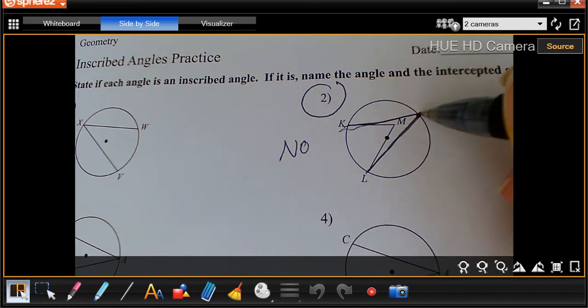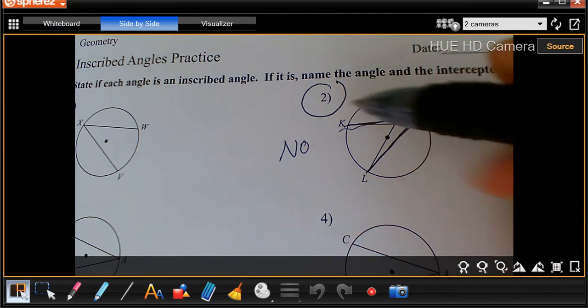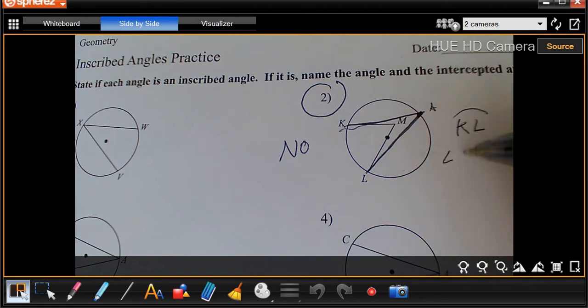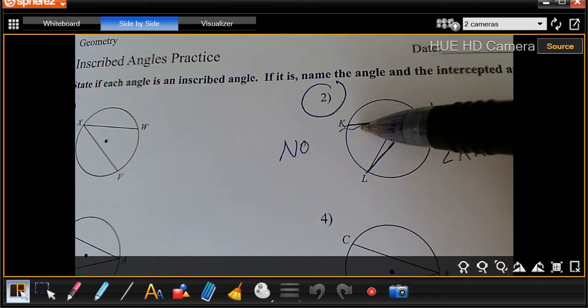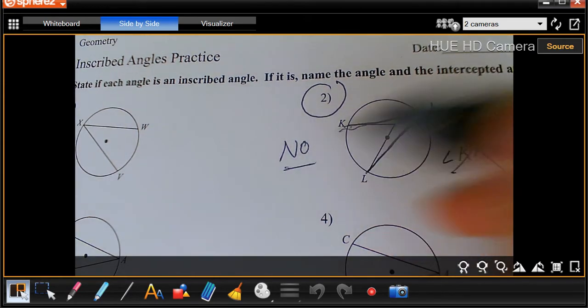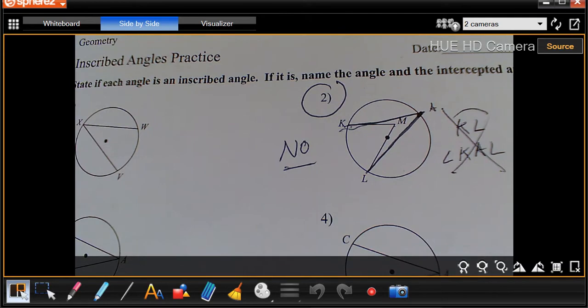If we label this point right here A, then we could be talking about arc KL and angle KAL, but again, with KML, it doesn't work. It's a no. So you could just put no for that one. I was just showing you how it could be.